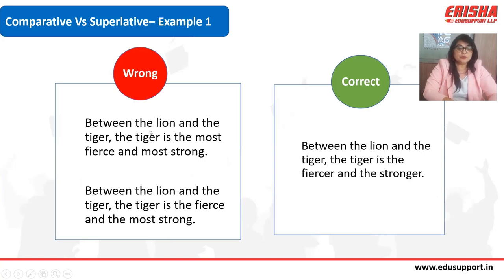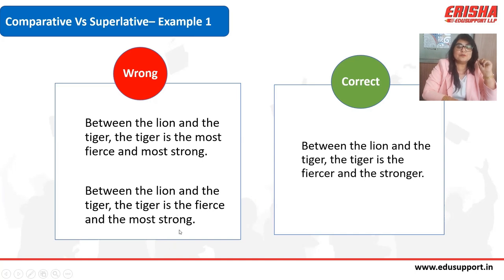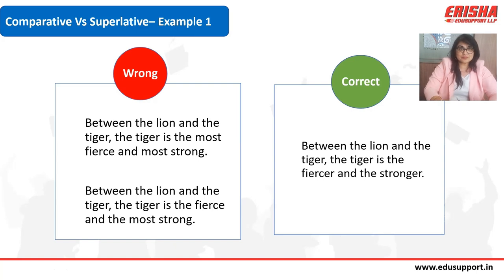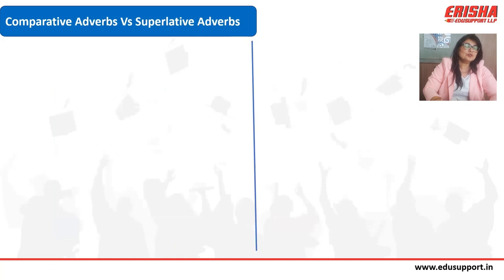The mistake is that only two animals are being compared — lion and tiger — so you cannot use 'most,' which is superlative for three or more. The correct sentence is: 'Between the lion and the tiger, the tiger is the fiercer and the stronger.'